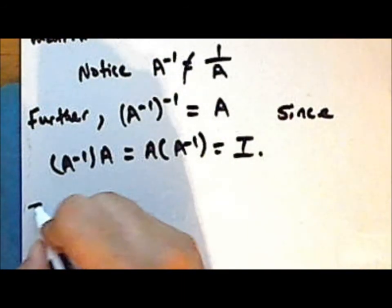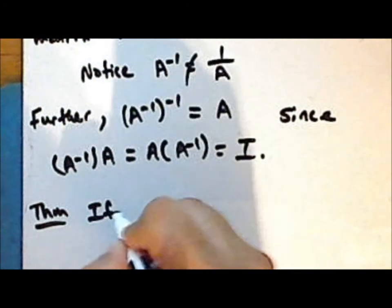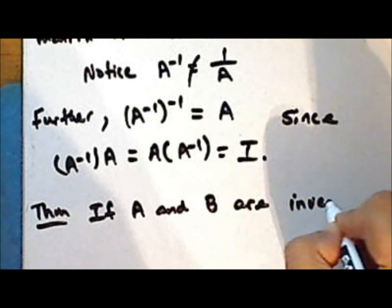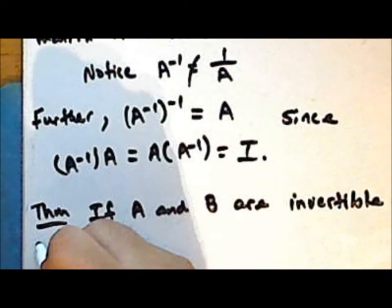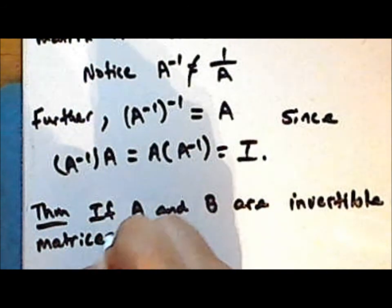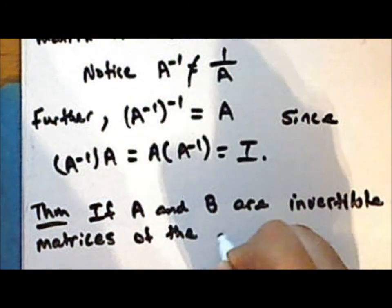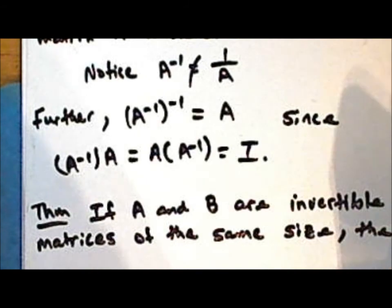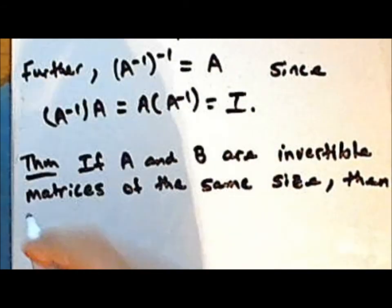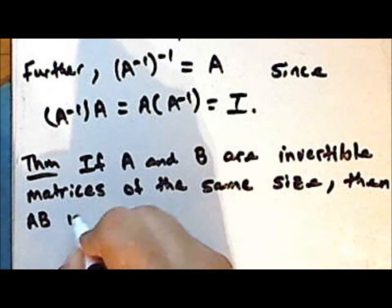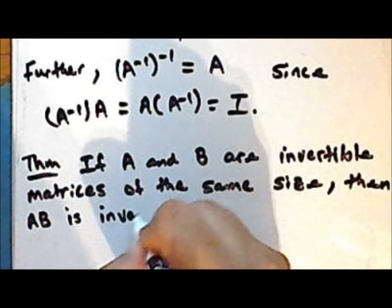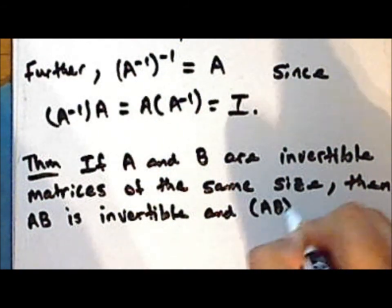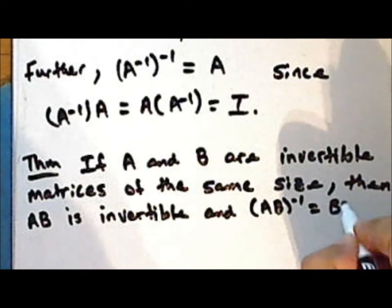Now a new theorem: if A and B are invertible matrices of the same size, then the product of A and B is invertible, and its inverse — the inverse of the product — is the product of the inverses in reverse order.